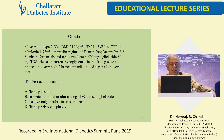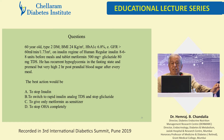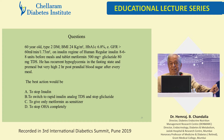Answer B is correct: switch to a rapid-acting analog, which prevents inter-prandial hypoglycemia because the action is very short, while also taking care of prandial hyperglycemia.